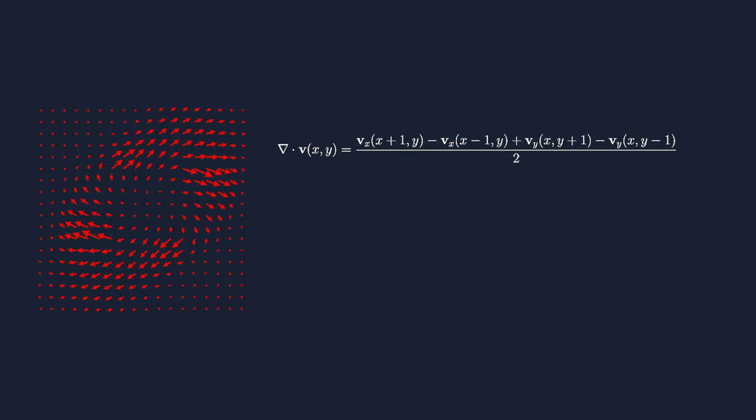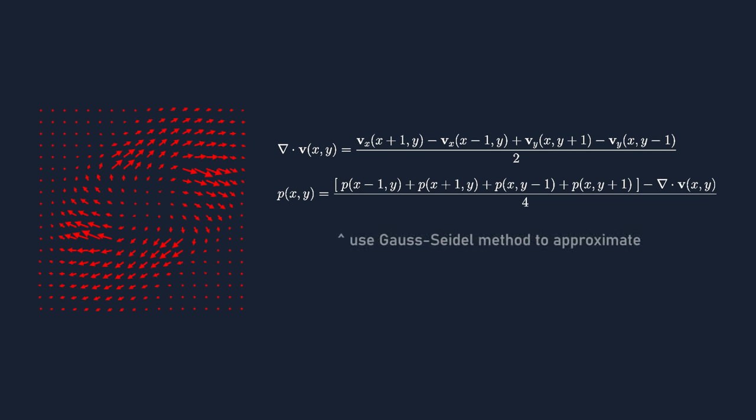After finding the divergence at every position in the field, the next step uses a system of simultaneous equations which look like this, where there's many p-values which all include the other p-values in their equation. We can once again use the Gauss-Seidel method to solve for p.